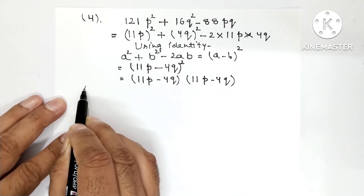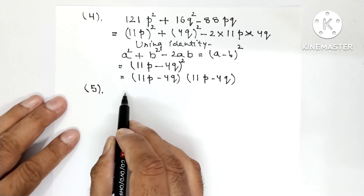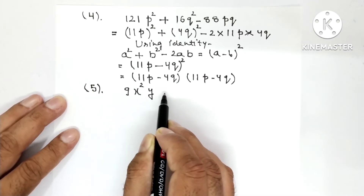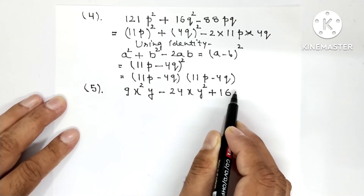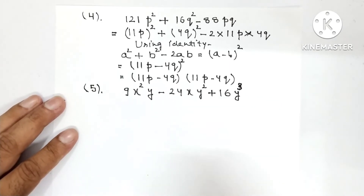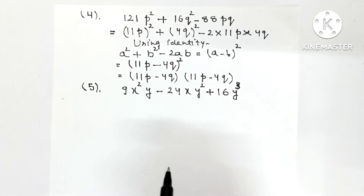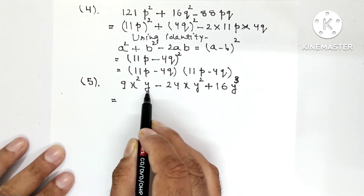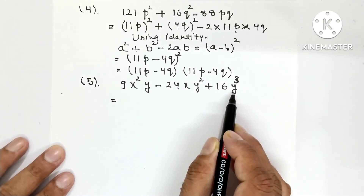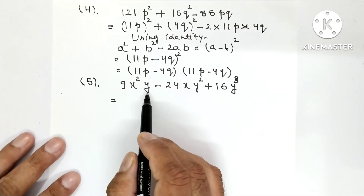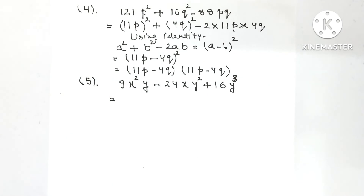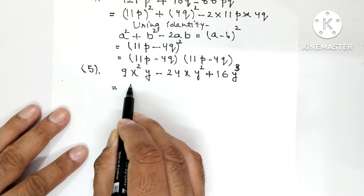Question 5: 9X²Y - 24XY² + 16Y³. If you think about making an identity here, you notice something different — there is a power of 3. Generally you have powers of 2, so we need to take something common. Looking at Y: Y is present in all three terms. Can we take X common? No — the first term has X², the second has X, and the third has no X term at all. In Y, Y², and Y³, the smallest power of Y is 1. So take Y common from all three terms.